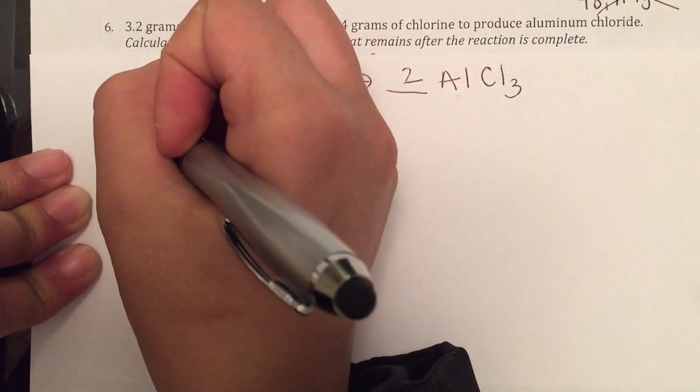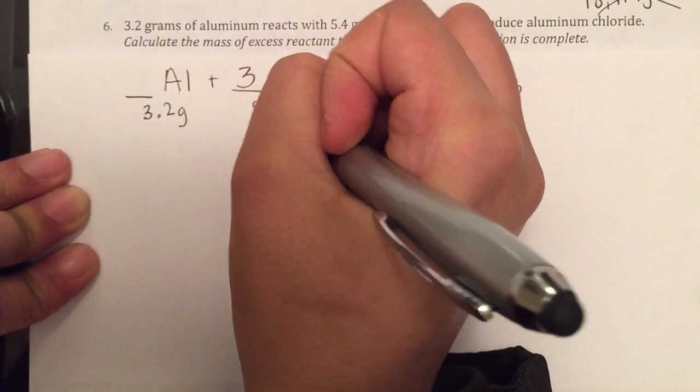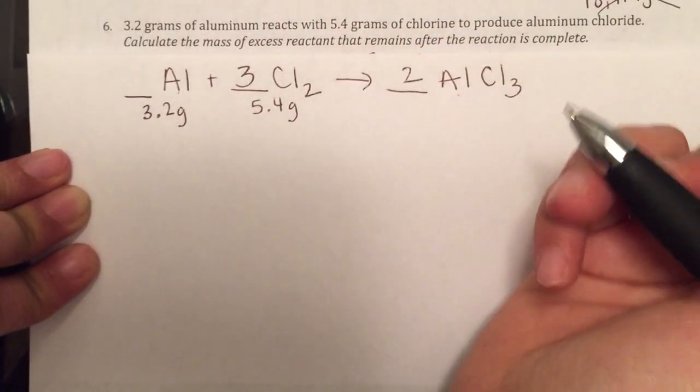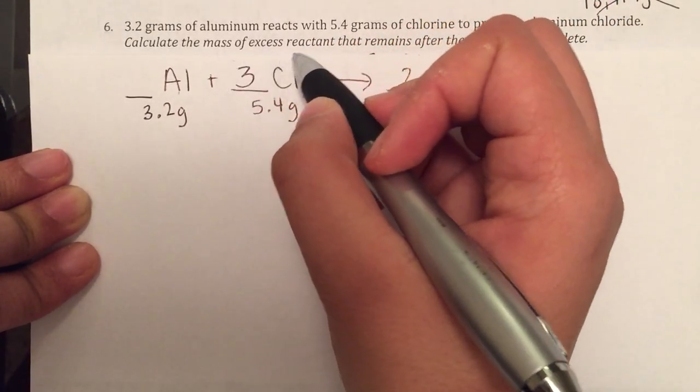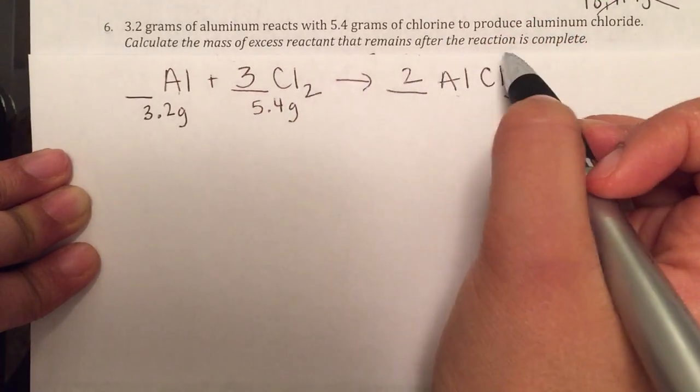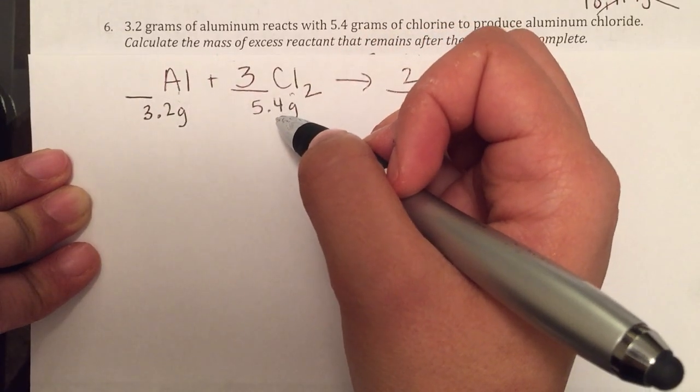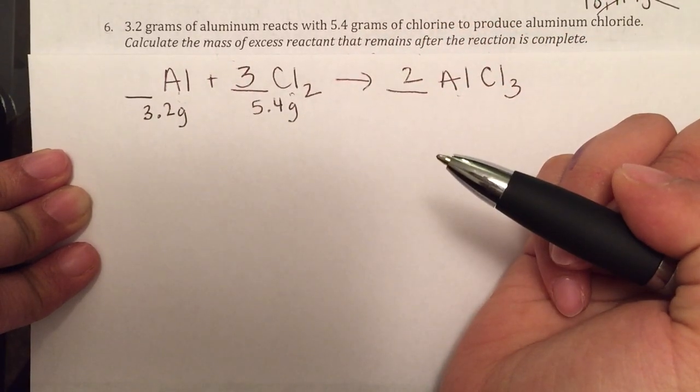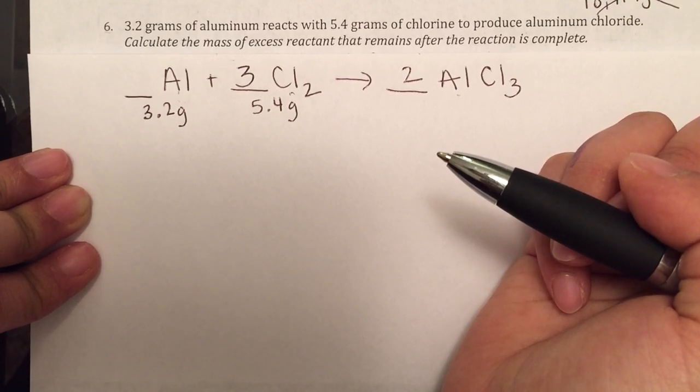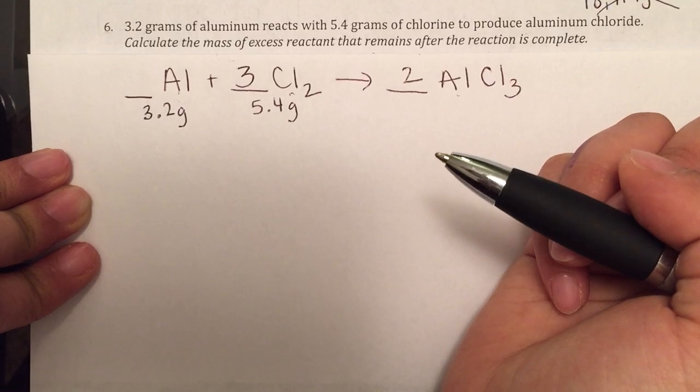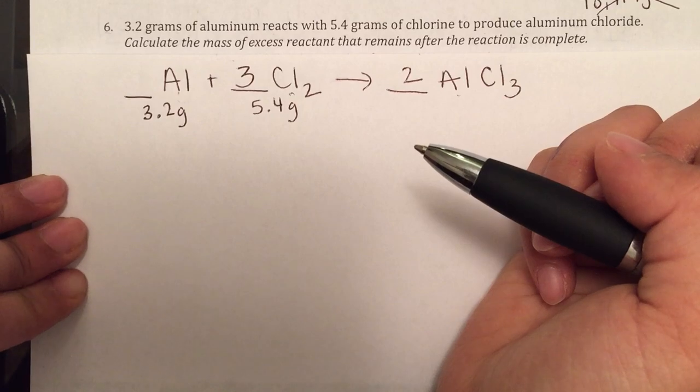Next, we write what we were given. So we're given 3.2 grams of aluminum, and then we're given 5.4 grams of chlorine. Now typically, I would put a question mark somewhere, but it's telling us to calculate the mass of the excess reactant that remains after the reaction is complete. I don't know which one is the excess reactant. So the first thing that you do is figure out who is the excess reactant, and then we can look at how much are we using up, and from that we can look at how much is remaining.